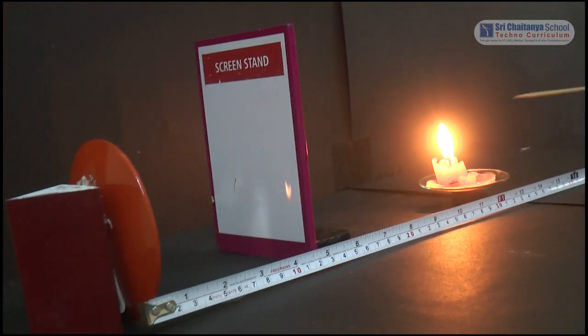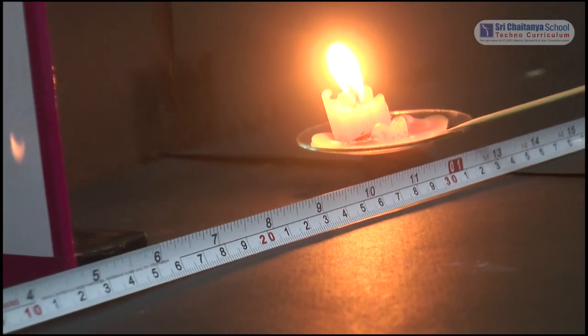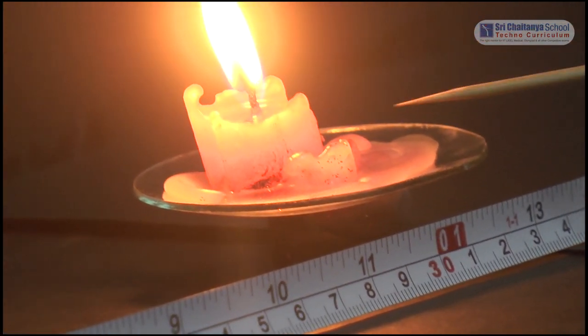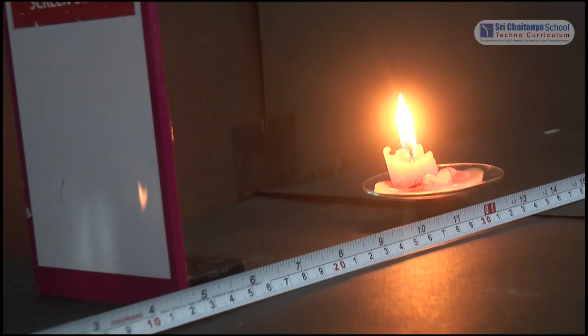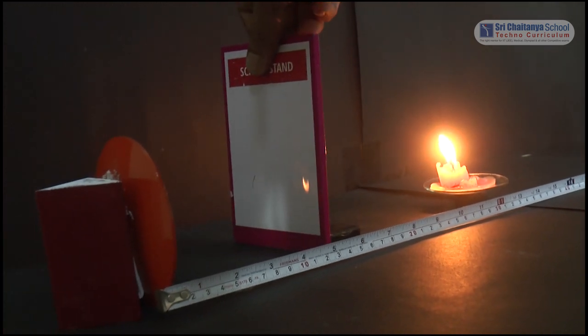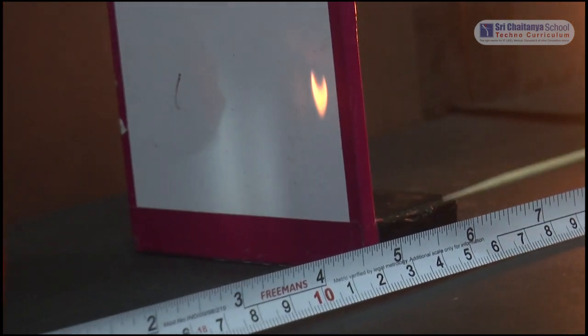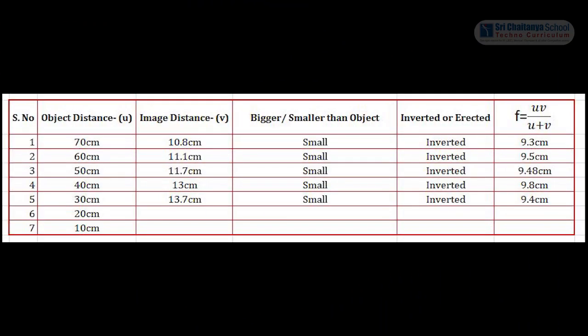Now move the object a little forward and keep it at 30 cm from the mirror. The object is placed at the 30 cm mark. Again, repeat the same procedure to trace the image by adjusting the screen back and forth. In this case, we got the image at nearly 13.7 cm. Tabulate the values: object distance 30 cm, image distance 13.7 cm, and from the formula the focal length is 9.4 cm.